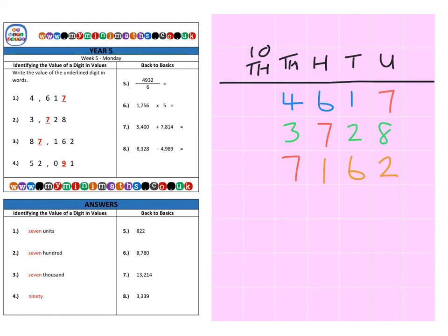and then finally we have an eight in the ten thousands column for eighty thousand. So we have a number here of eighty seven thousand one hundred and sixty-two, meaning that the seven has a value of seven thousand.